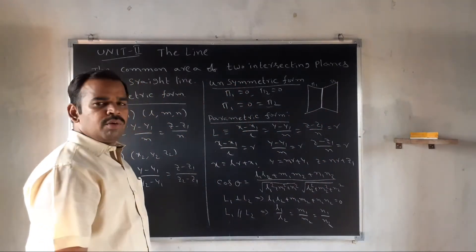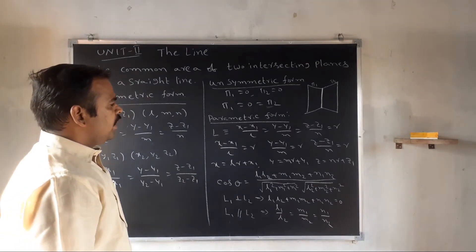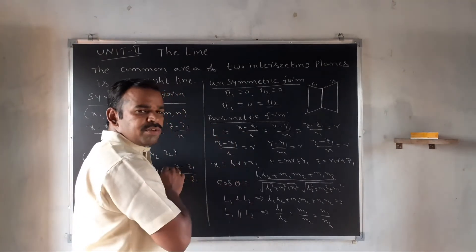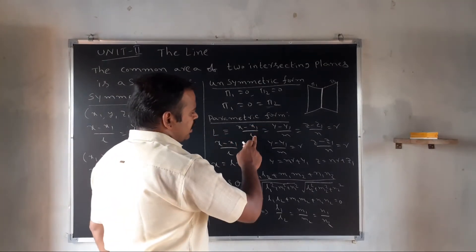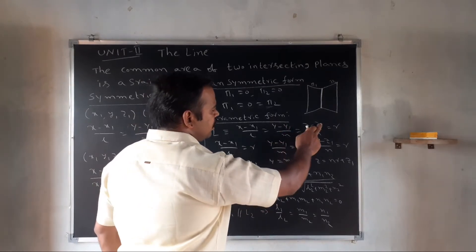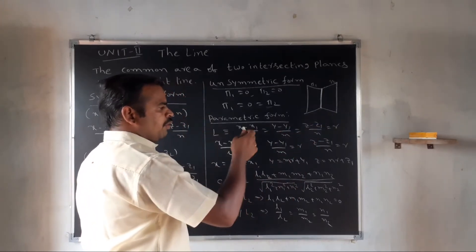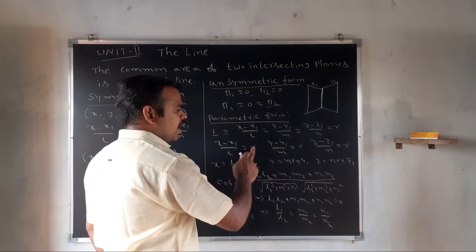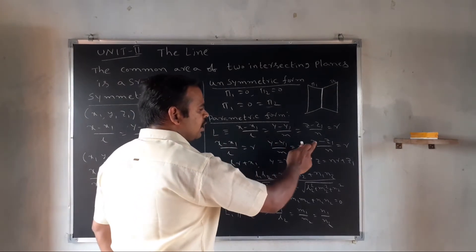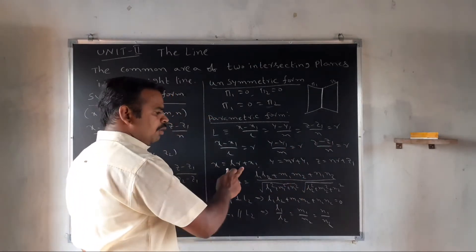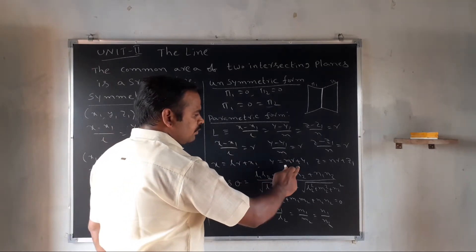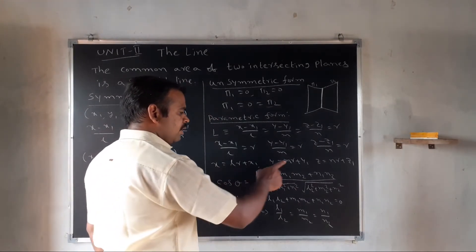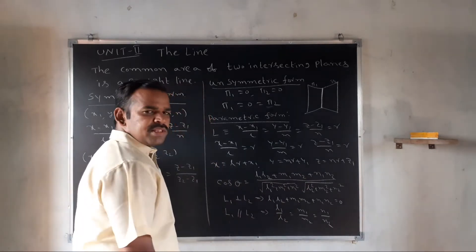Parametric form. Setting the line equation L equal to parameter r: (x − x1)/l = (y − y1)/m = (z − z1)/n = r. This gives the parametric equations: X = lr + x1, Y = mr + y1, Z = nr + z1.